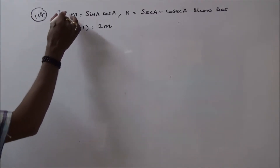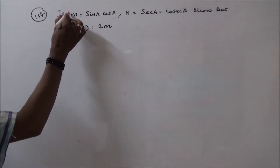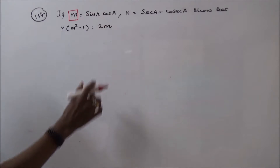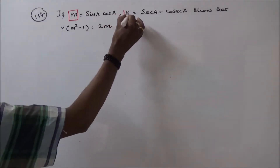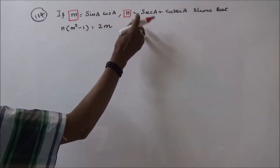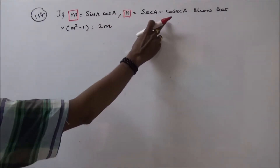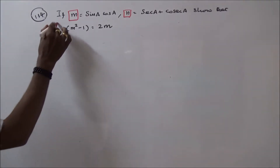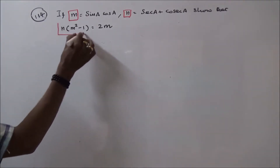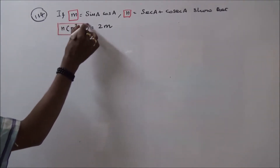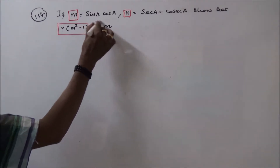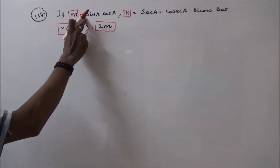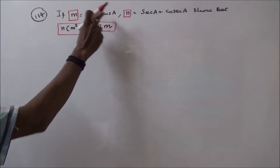If m is equal to sin a plus cos a, and n is equal to cosecant a plus secant a, show that n into m square minus 1 is equal to 2 into m, that is 2 into sin a into cos a.